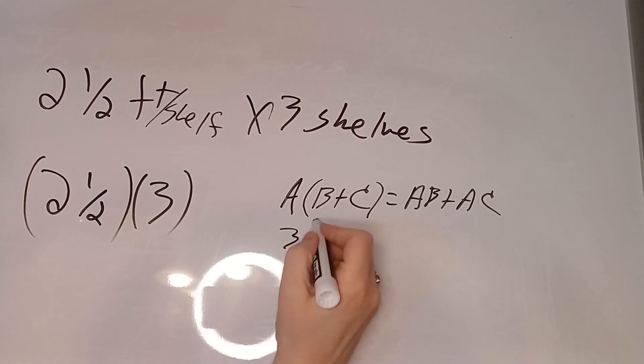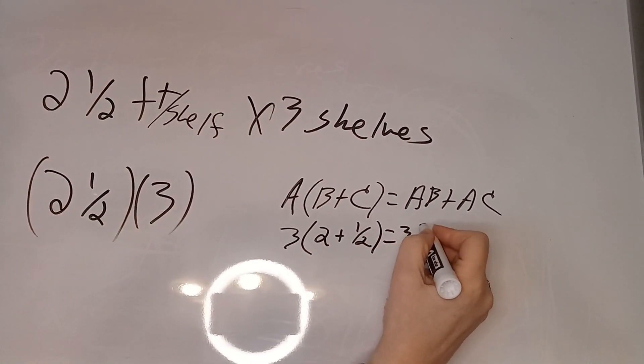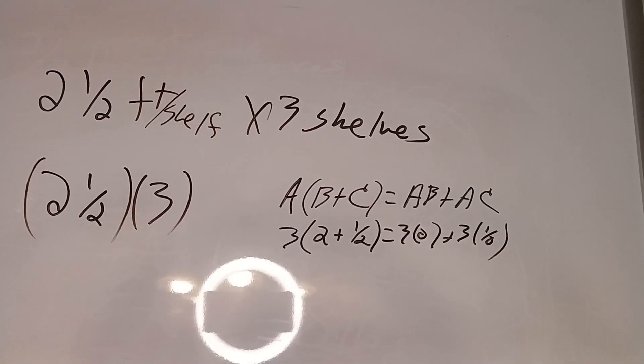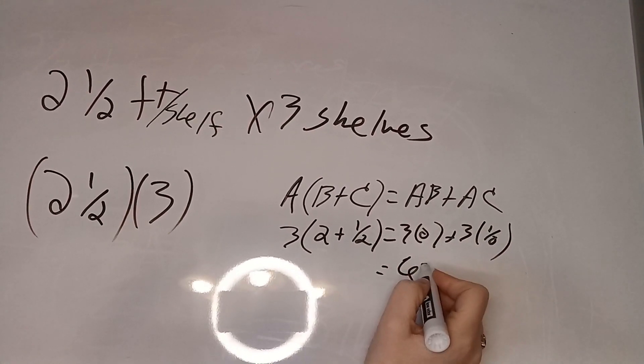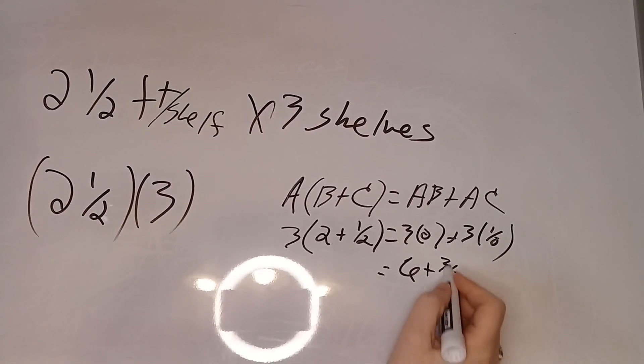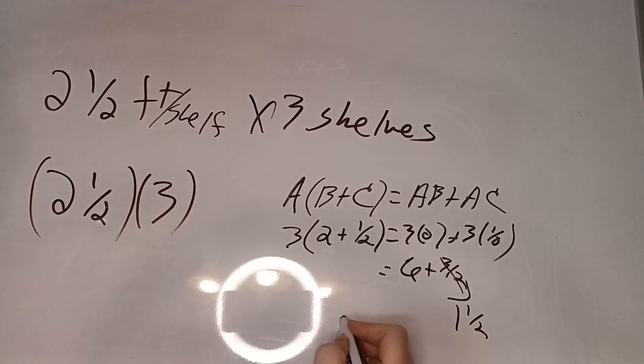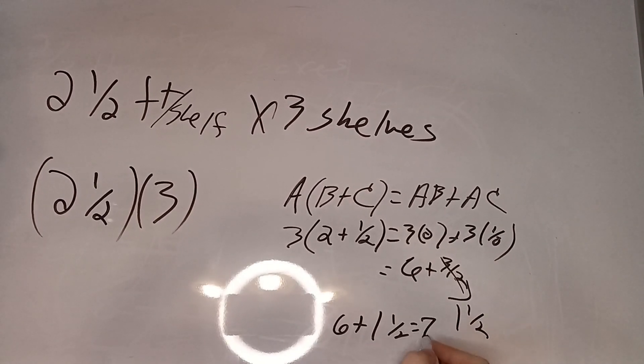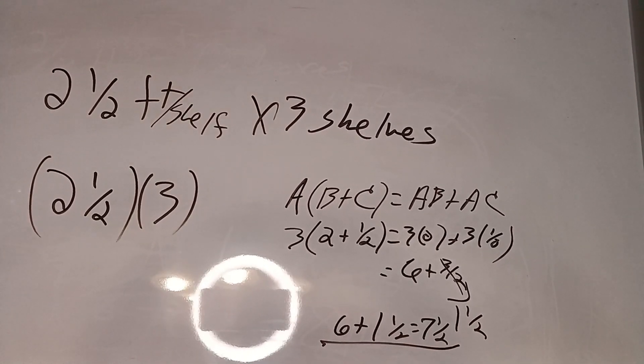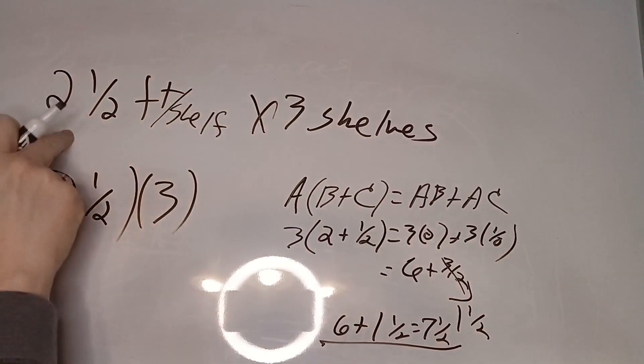In this case we have three times two plus a half. Three times two plus three times a half. Okay, three times two is six plus three halves. Well, three halves is one and a half. So our answer is six plus one and a half is seven and a half. So we need seven and a half feet of wood to make three shelves that are two and a half feet each.